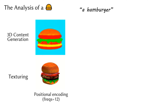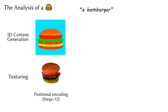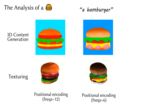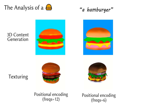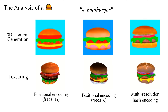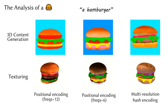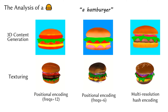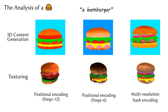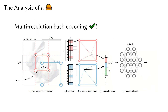As shown in the video, positional encoding causes grid-like artifacts. We then investigated two methods to mitigate the effect of high-frequency information: reducing the maximum frequency of positional encoding from 12 to 6, and employing multi-resolution hash encoding. Both methods could reduce the grid-like artifacts, and hash encoding could achieve a better balance between generating highly detailed results and mitigating high-frequency noises with the multi-resolution structure.